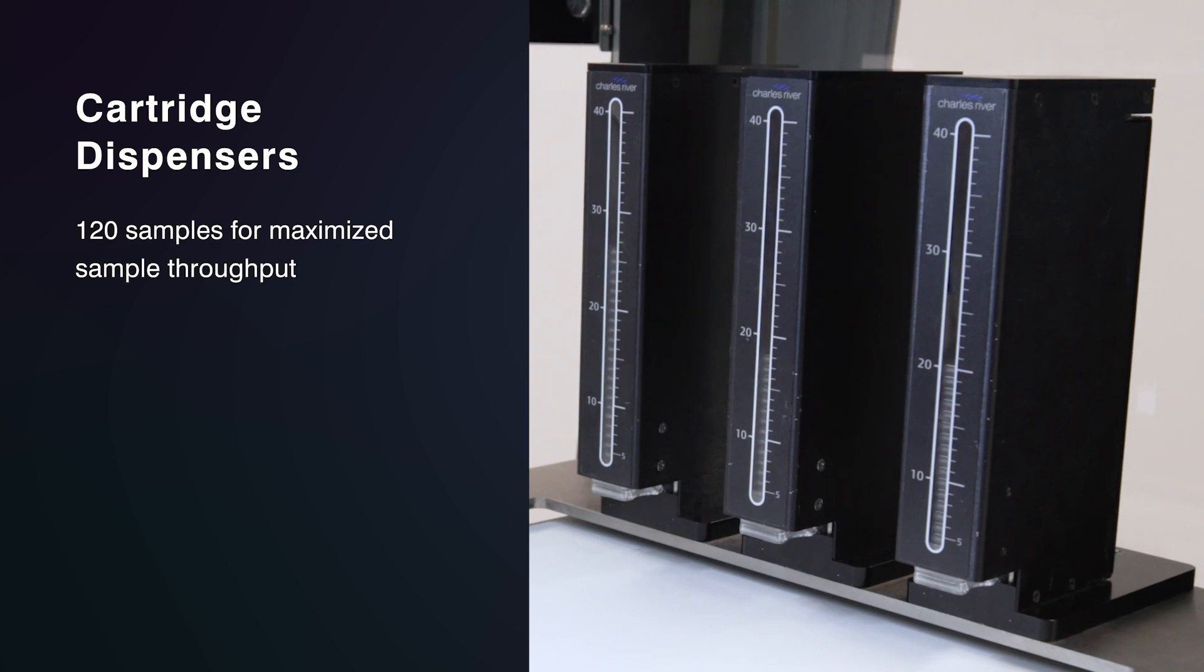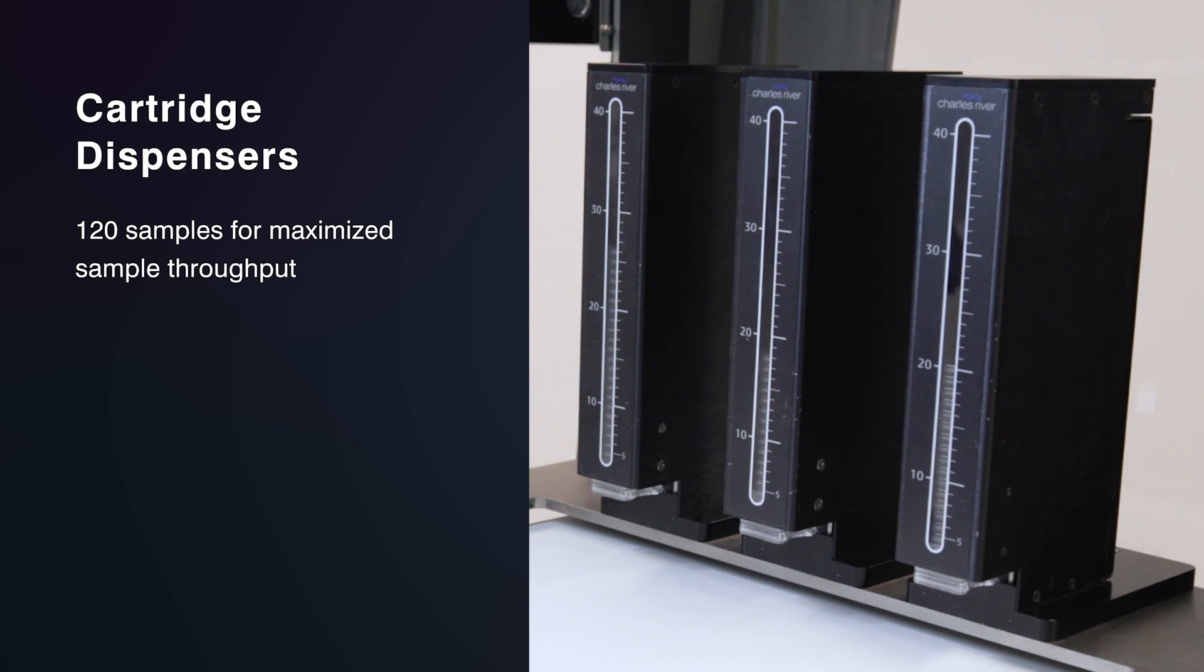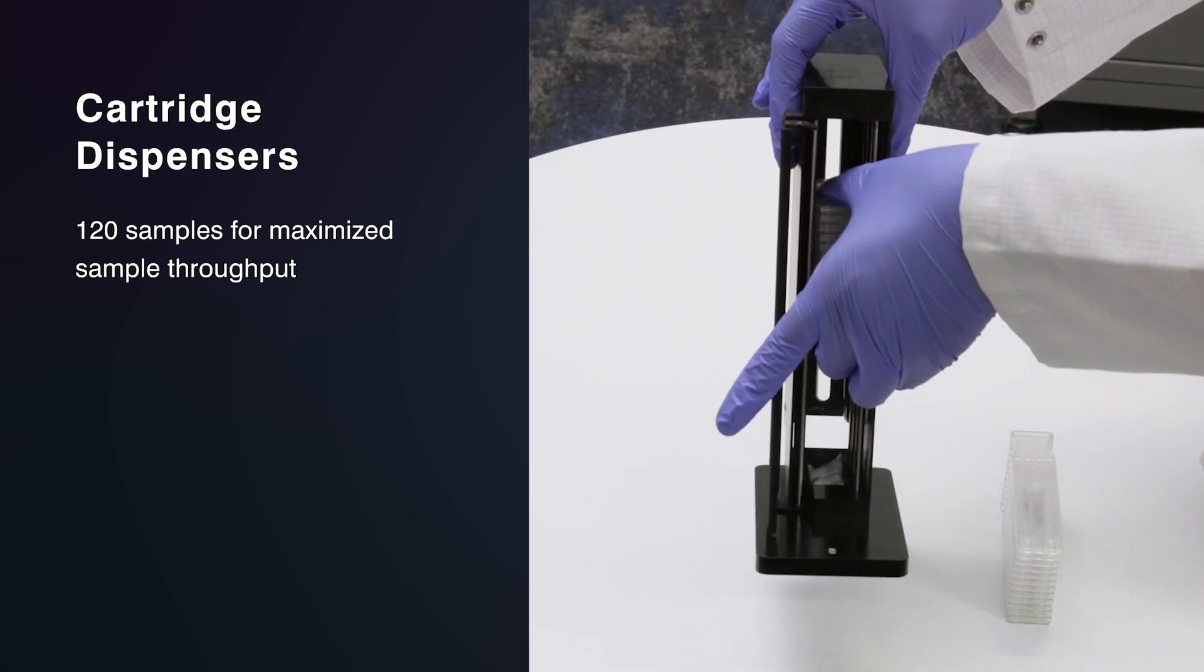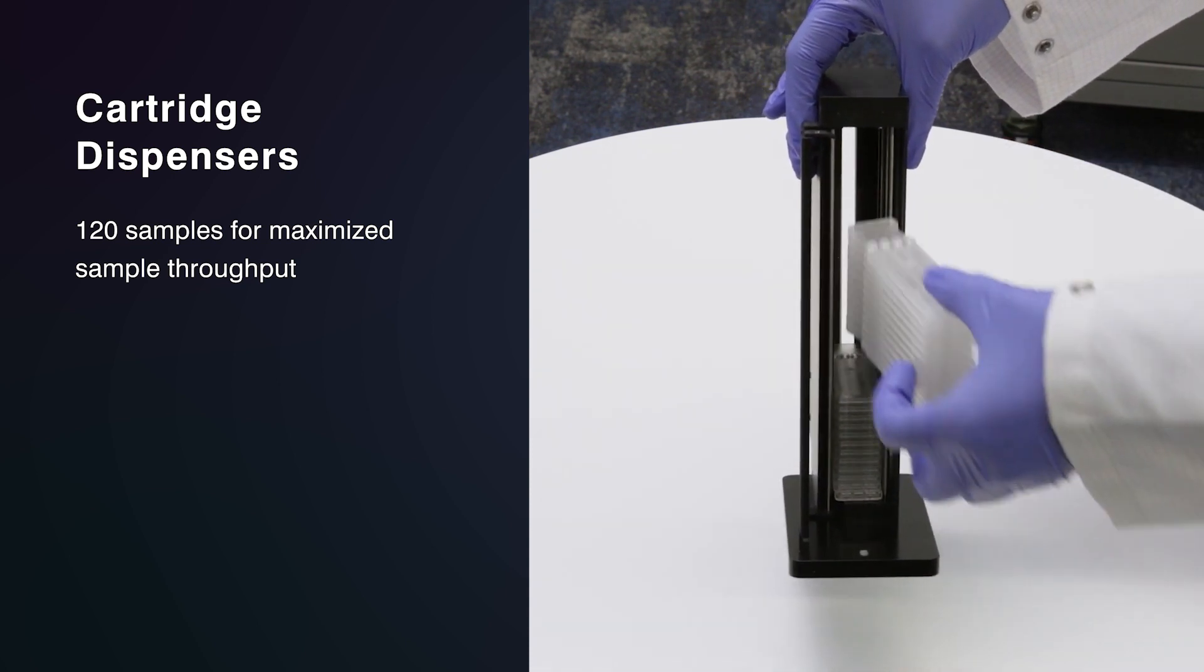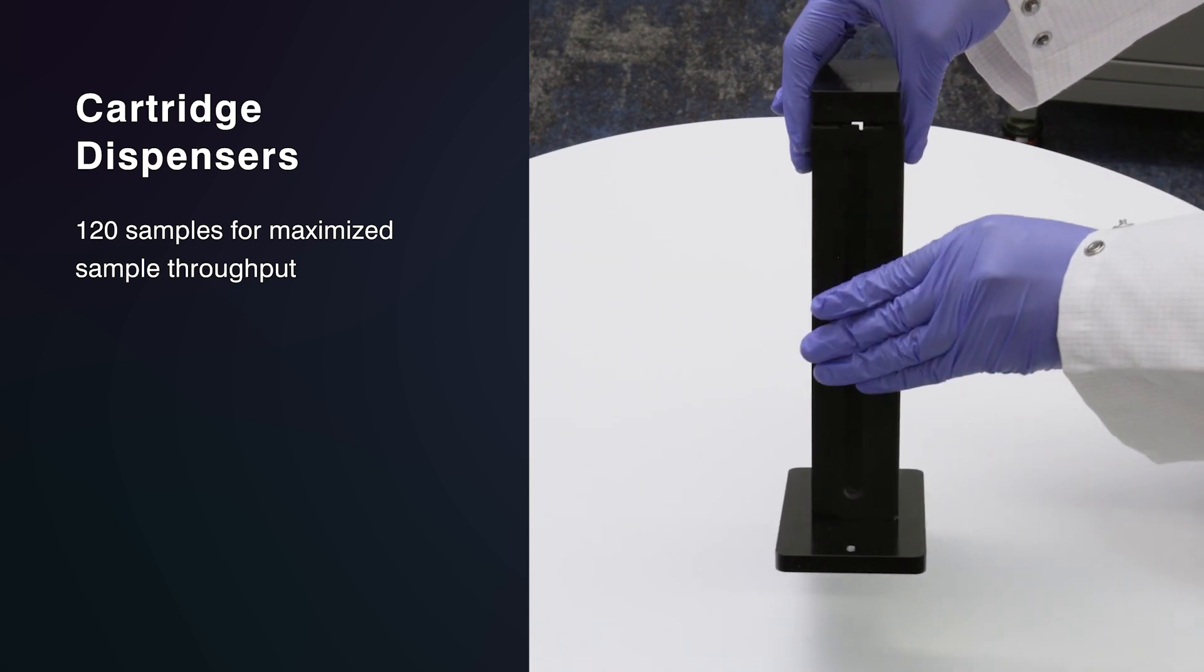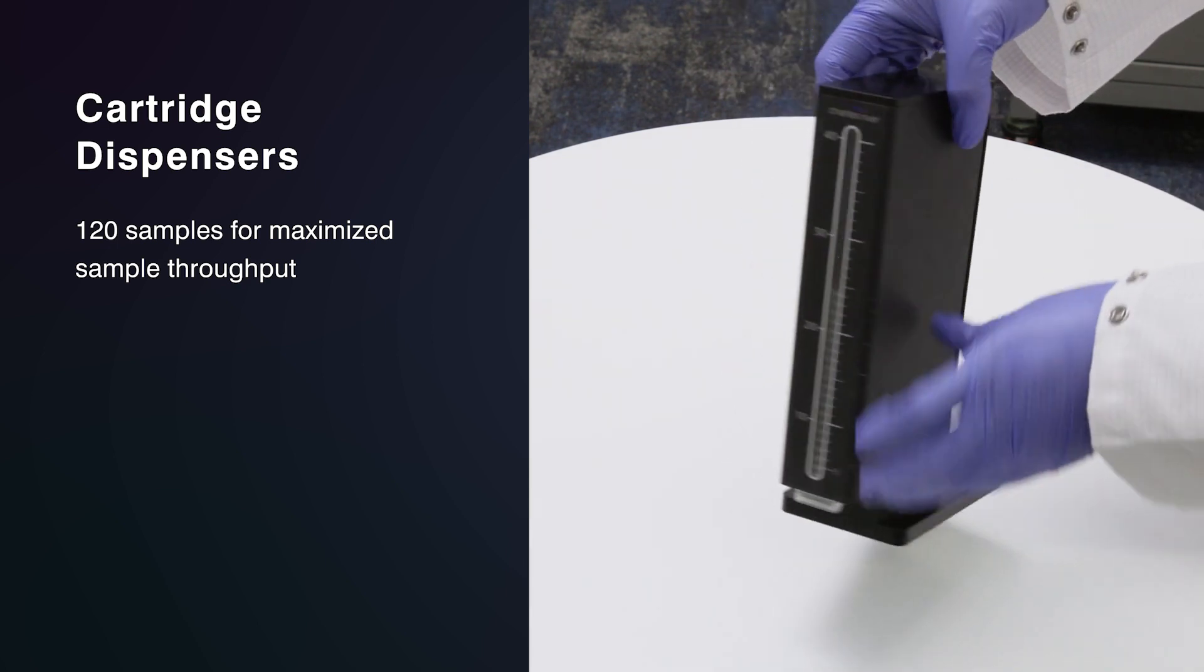There are three cartridge dispensers that hold the EndoSafe cartridges. Each dispenser can be loaded with up to 40 cartridges of the same sensitivity, for a total of up to 120 diluted or undiluted samples per run, allowing for maximized sample throughput.